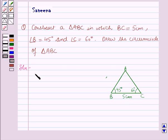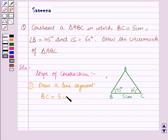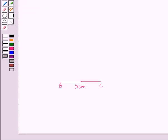Now we will start with the steps of construction. First of all we will draw a line segment BC equal to 5 cm. Now here you can see we have drawn a line segment BC which is 5 cm.